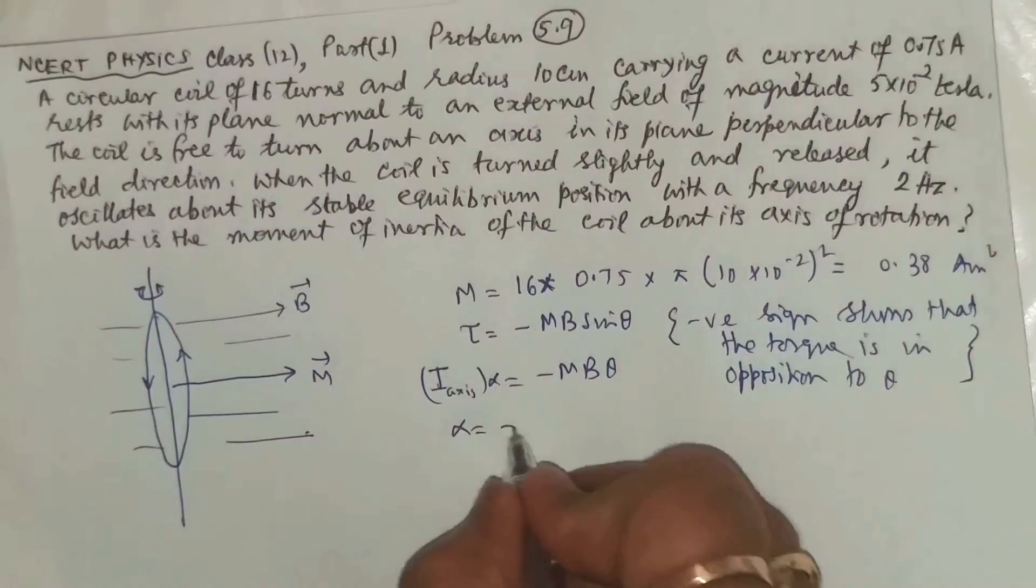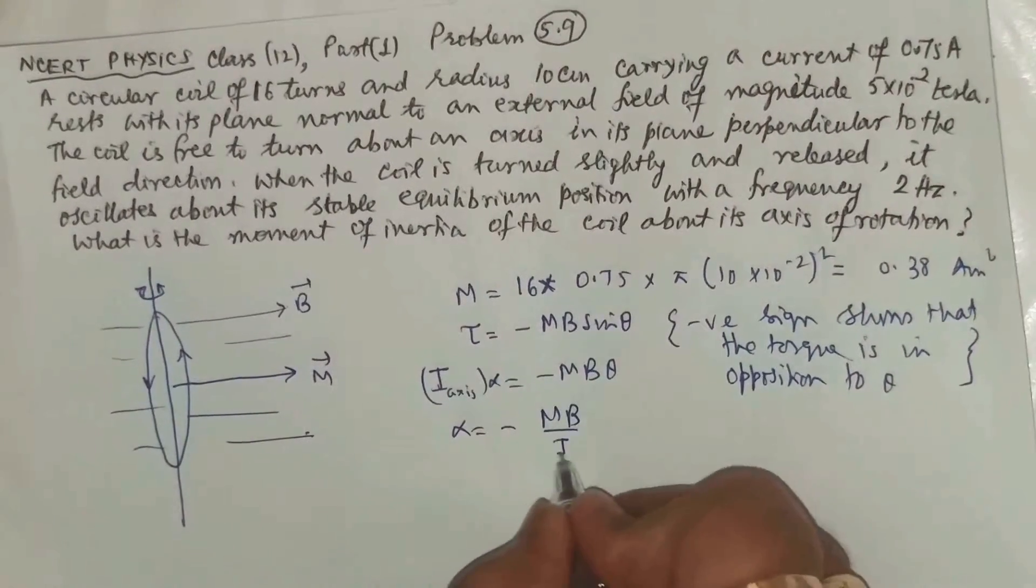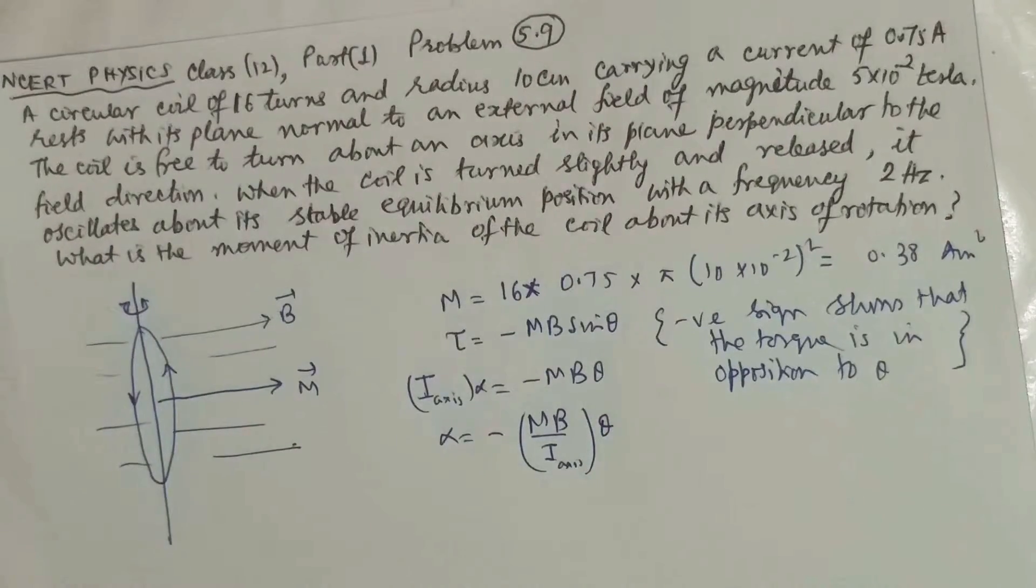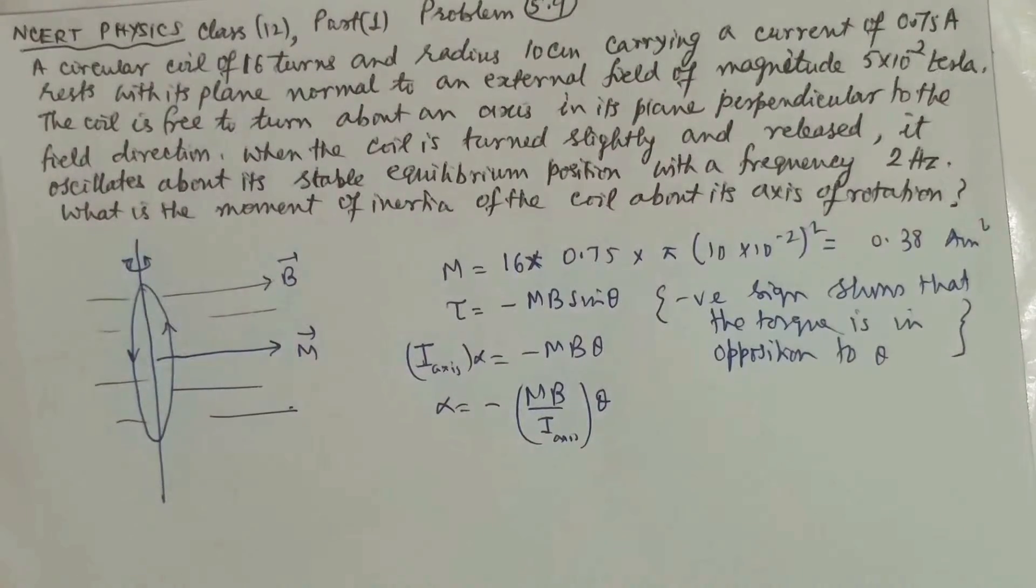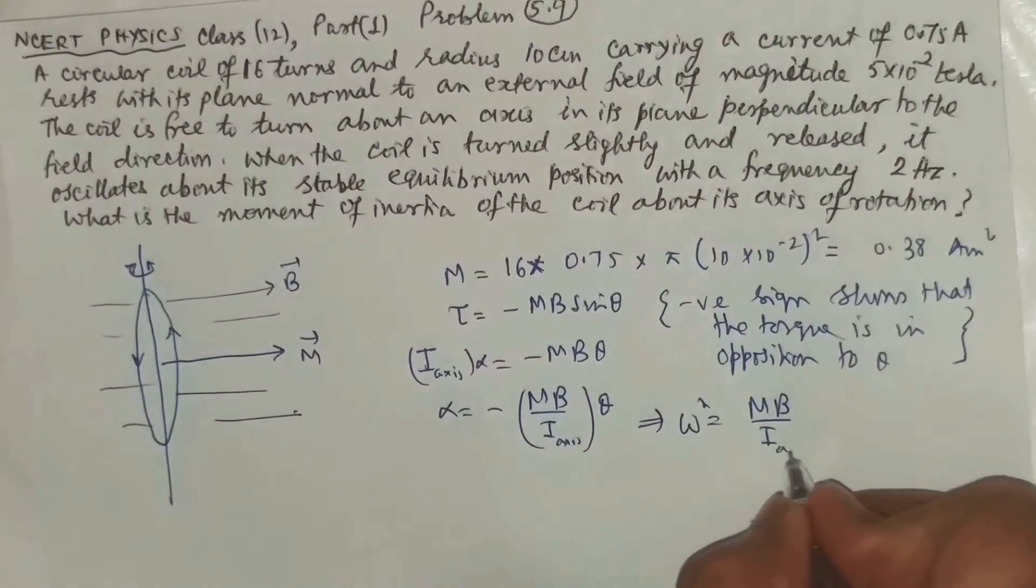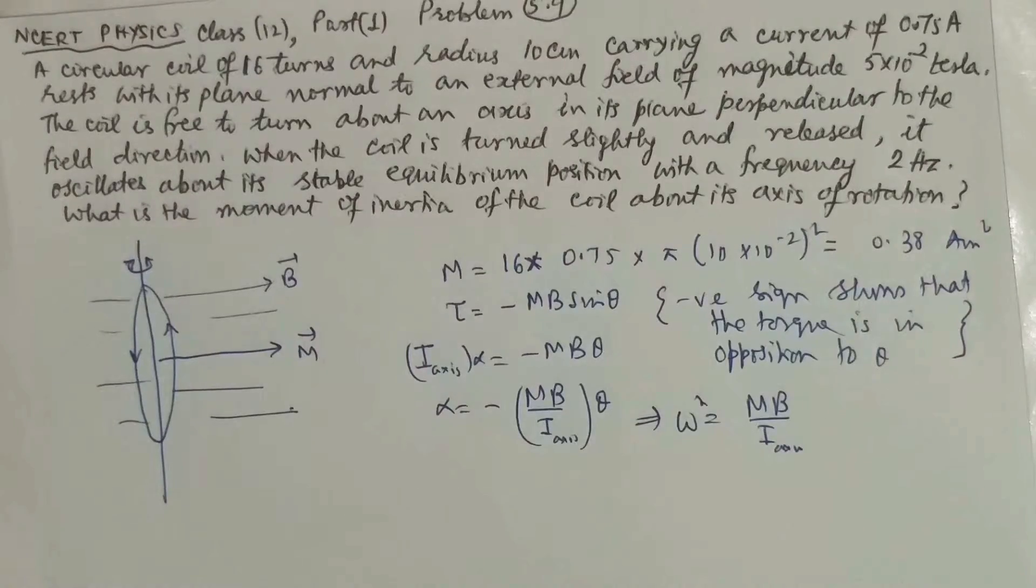From there, alpha is equal to minus mb divided by I into theta. This reminds us that it will perform simple harmonic oscillations with omega square as mb divided by I.